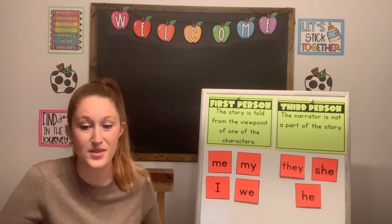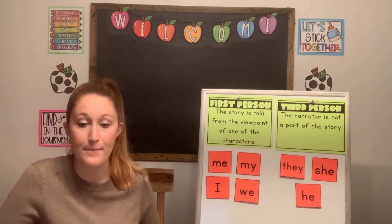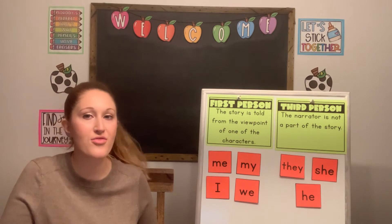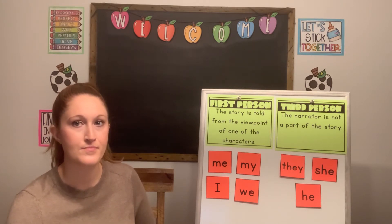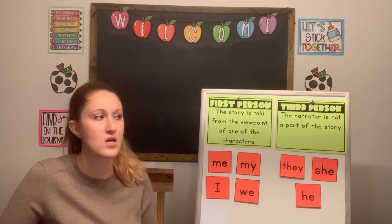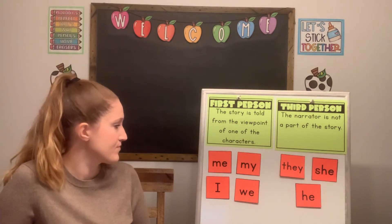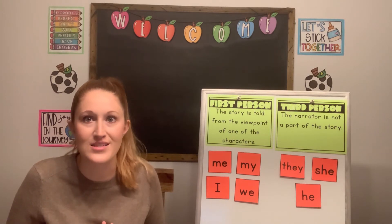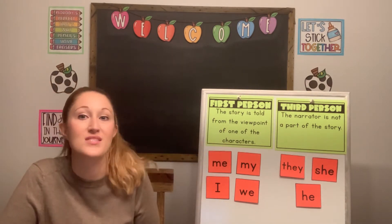'Every year, we go on vacation to Florida. But this year, we are going to California.' That's first-person. We use that word 'we,' and when I say 'we,' I'm including myself in that sentence. 'We go to the store' means I'm going too — the main character is including themselves in that statement.